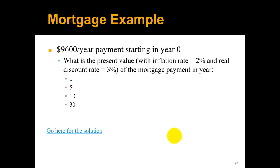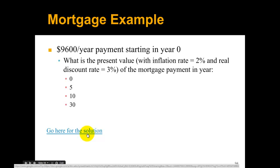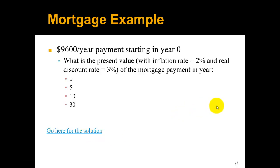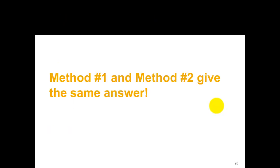Let's look at another example: a typical mortgage with ninety-six hundred dollars per year payment starting in year zero. What is the present value given the inflation rate and real discount rate? I'm not going to go over the full solution here, but you can click the link to open a Google spreadsheet showing how to calculate this using both method one and method two, and you'll see that both methods give the same answer.